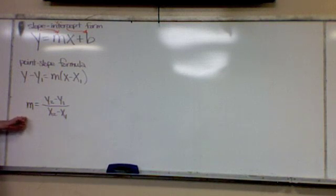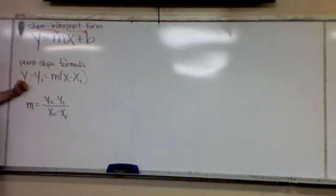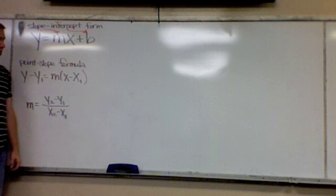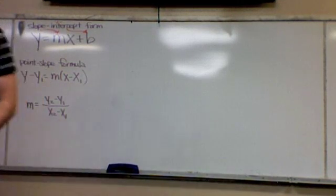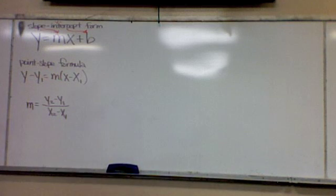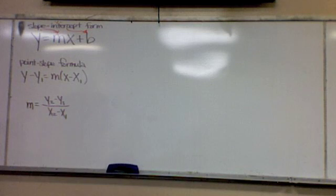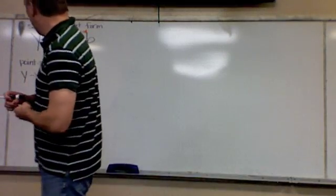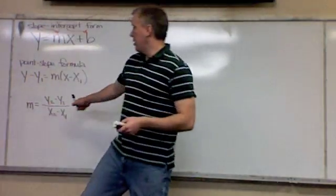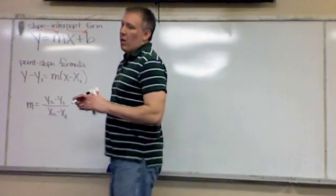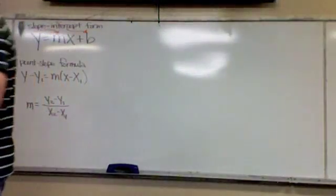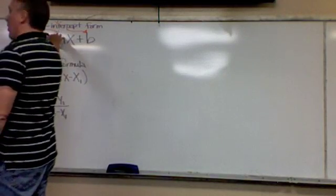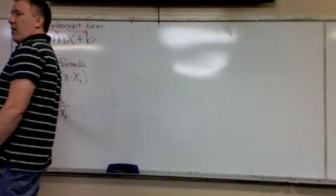What's this part of the whole thing? Slope. The slope-intercept, the point-slope, and the slope formula — they all have to do with slope. Point-slope is the same thing as finding the equation of a line. This is just finding the slope.